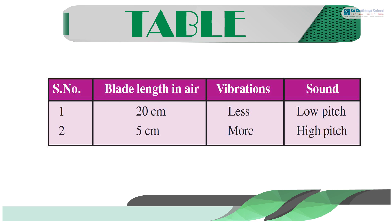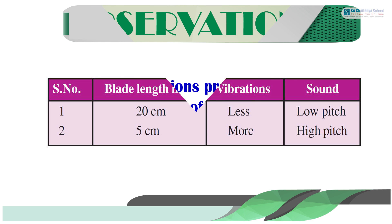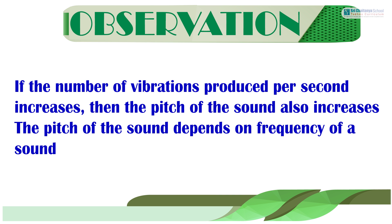Record the readings in a table. The first blade length in air is 20 cm — the vibrations are less and the sound is low pitch. The second blade length in air is 5 cm — the vibrations are more and the sound is high pitch.